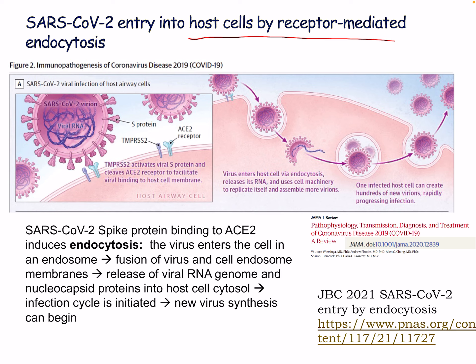The virus enters the host cell by receptor-mediated endocytosis. TMPRSS2 activates the virus protein and cleaves the ACE2 receptor to facilitate viral binding to the host cell membrane. The virus enters the host cell via endocytosis, releases RNA, and uses the cell machinery to replicate itself and assemble more virions. One infected host cell can create hundreds of new virions, rapidly progressing infection. Interferon responses are a key process in SARS-CoV-2 immunity — people without symptoms may have strong interferon responses that protect them from developing disease.